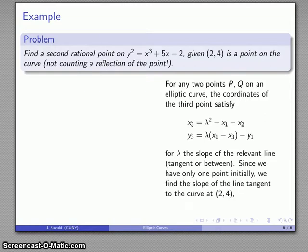So here I only have one point initially, so the slope of the tangent line is going to be the relevant slope. I'll use the implicit differentiation method and I can find the slope of the tangent line. I have my values of x and y: x is 2, y equals 4. Substituting those in, I get λ = 17/8 as the slope of the line.